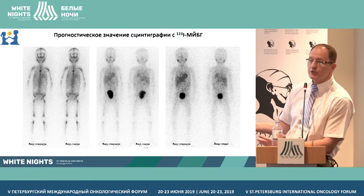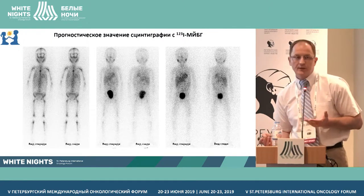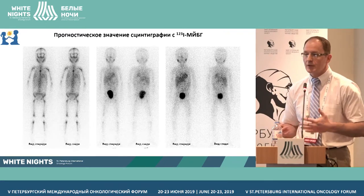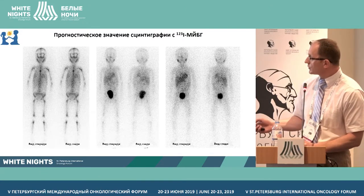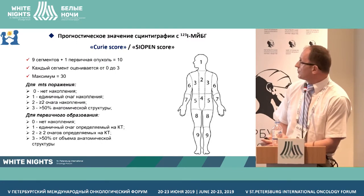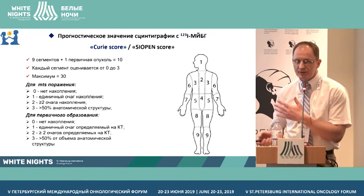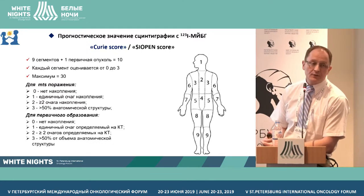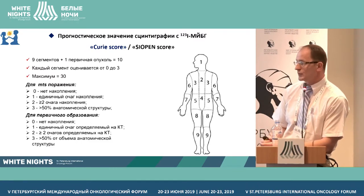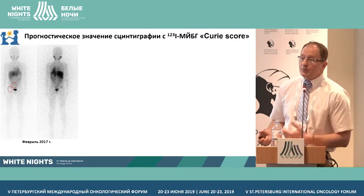Everybody knows that during the initial study, we may have multiple metastases. In the process of therapy, the number of foci goes down, and by the end of therapy, no foci at all. There's always a question from the oncologist to the radiologist: how to calculate this, and does it have prognostic value? A whole number of techniques have been offered. For example, the Curie score — the body of the patient is divided into nine segments, and the 10th segment is the primary mass. Based on the latest publication, it was shown that if the Curie score after the end of induction equals two or less, the prognosis is better for the patient.